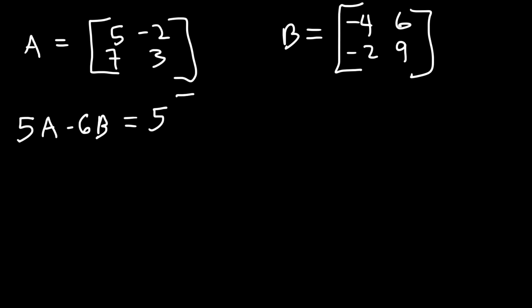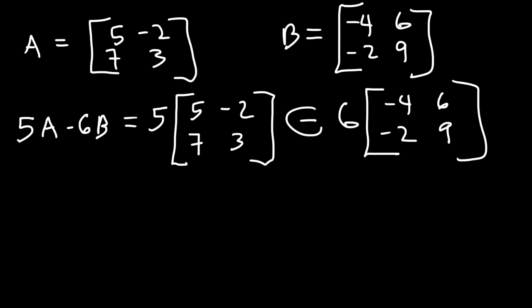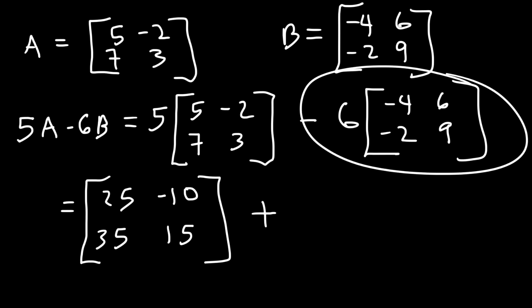So we've got to multiply matrix A by 5. And then there's going to be a subtraction sign, and then we're going to multiply matrix B by 6, or negative 6. If you multiply it by 6, the negative sign will remain here. But if you multiply it by negative 6, you could change it and put a plus sign, which I think is easier. So first, let's multiply this matrix by 5. So 5 times 5 is 25, 5 times negative 2 is negative 10, 5 times 7 is 35, 5 times 3 is 15.